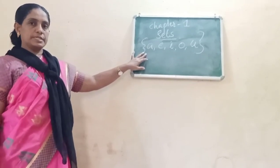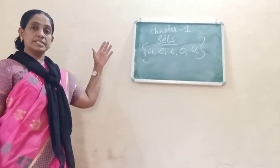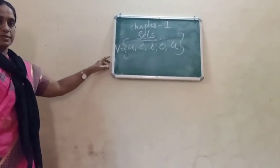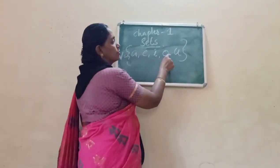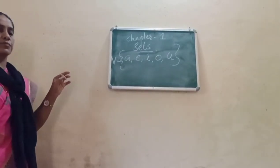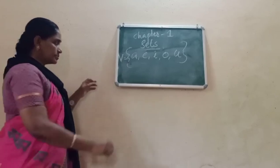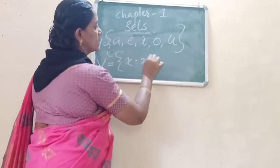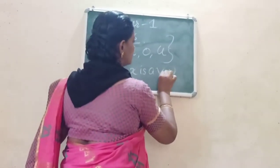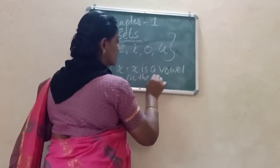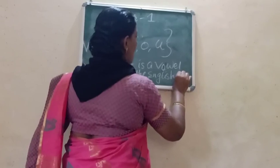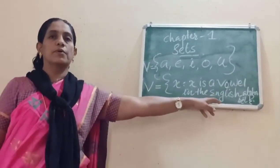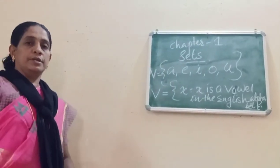This tabular form can be converted to set builder form. Vowels are denoted by V. So V = {A, E, I, O, U} in tabular form. In set builder form, this is written as V = {x : x is a vowel in the English alphabet}. This form is called set builder form or rule method.